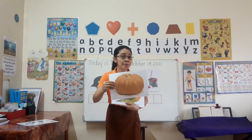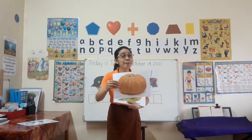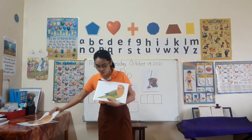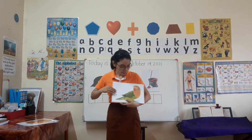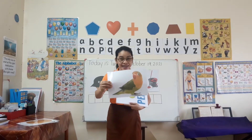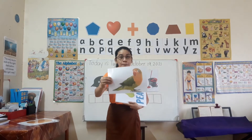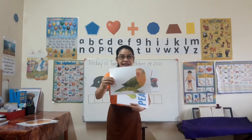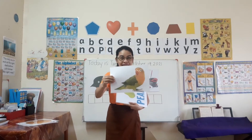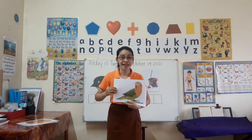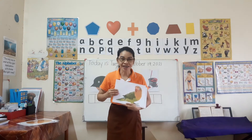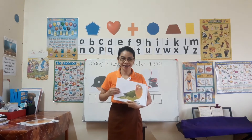Very good. What is this one? This is a pumpkin. Okay, again: pumpkin. Pumpkin. Very good. What about this one? Parrot. Yes, parrot. This parrot can talk.